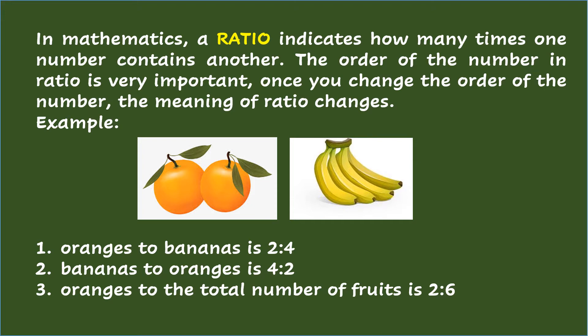there are 2 oranges and 4 bananas. So the ratio of oranges to bananas is 2 is to 4, since there are 2 oranges and 4 bananas. While the ratio of bananas to oranges is 4 is to 2. And the ratio of oranges to the total number of fruits is 2 is to 6.